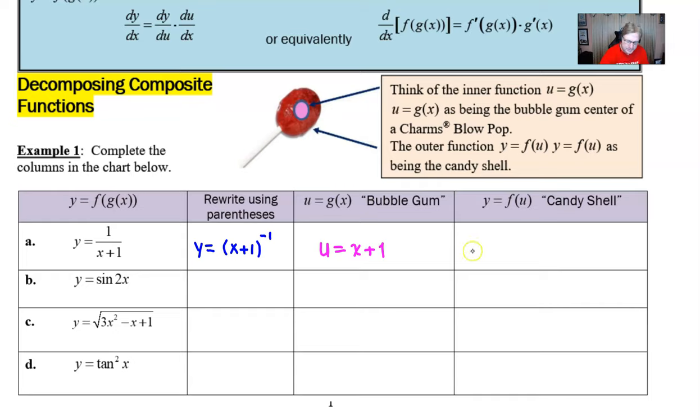So what does that say about the candy shell, which I'll do in red? Well, that means that the y = will simply be what we have written here with the usage of parentheses, except replace the x + 1 with the u that we used, and so in this case we get u raised to the negative one power.